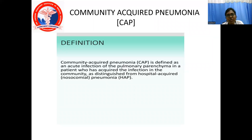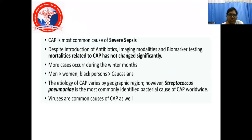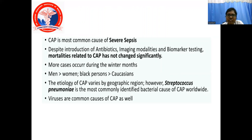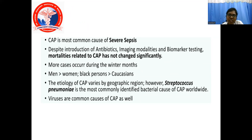Community-acquired pneumonia is defined as acute infection of the pulmonary parenchyma in a patient who acquired the infection in the community, as distinguished from hospital-acquired or nosocomial pneumonia. It is the most common cause of sepsis. Despite introduction of antibiotics, imaging modalities, and biomarker testing, mortality related to community-acquired pneumonia has not changed significantly. More cases occur during winter months; it is more common in men than women and more common in Black persons compared to Caucasians. Streptococcus pneumoniae is the most commonly identified bacterial cause worldwide, though viruses are also a common cause.